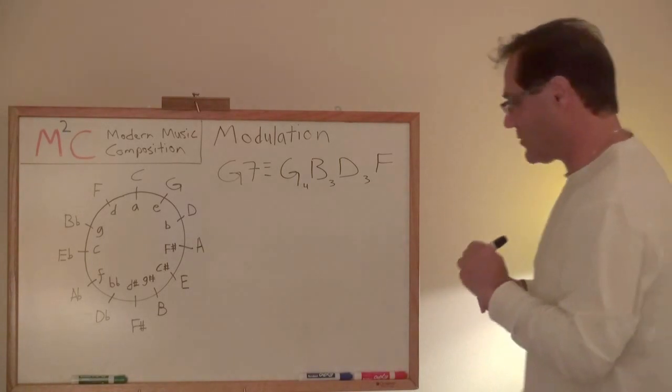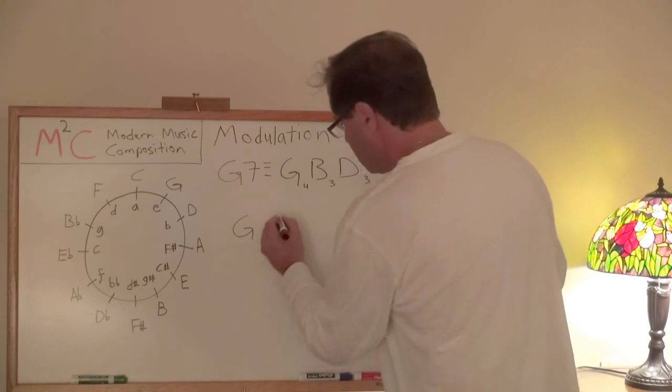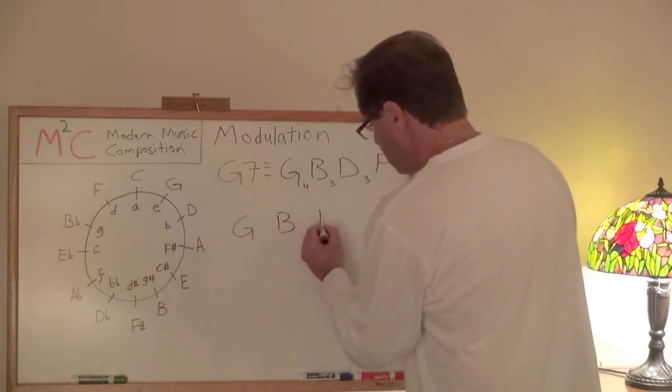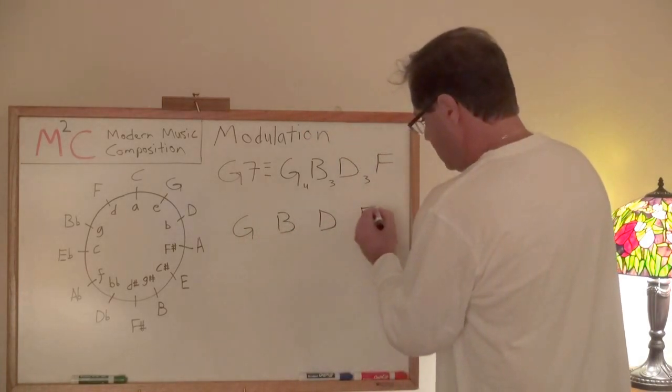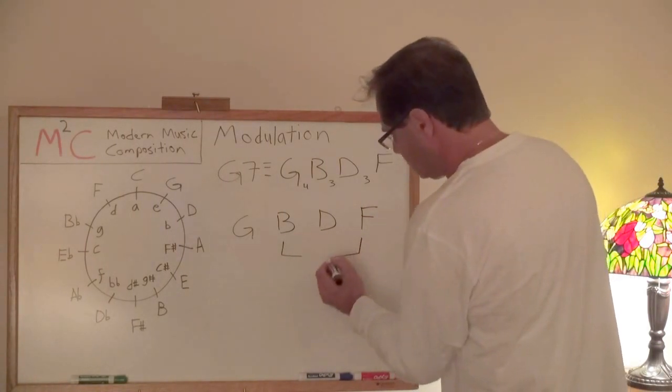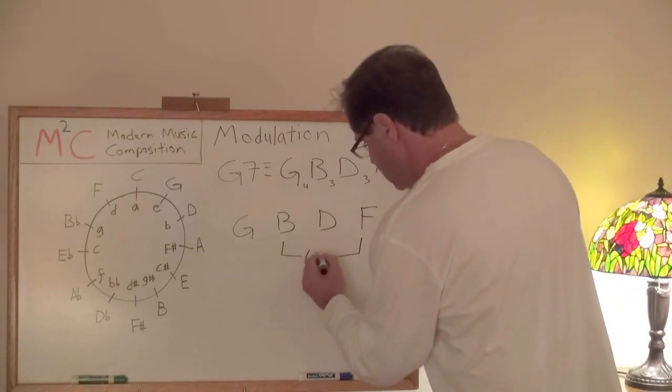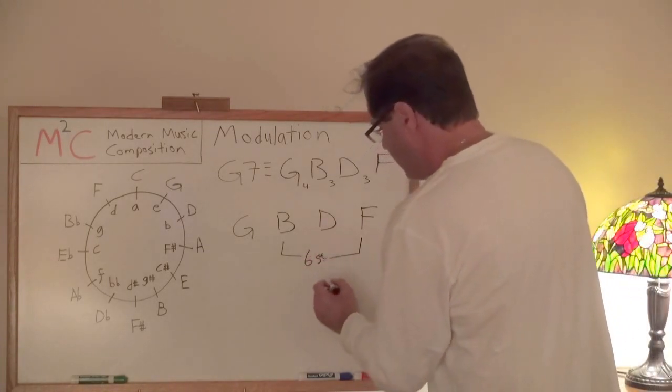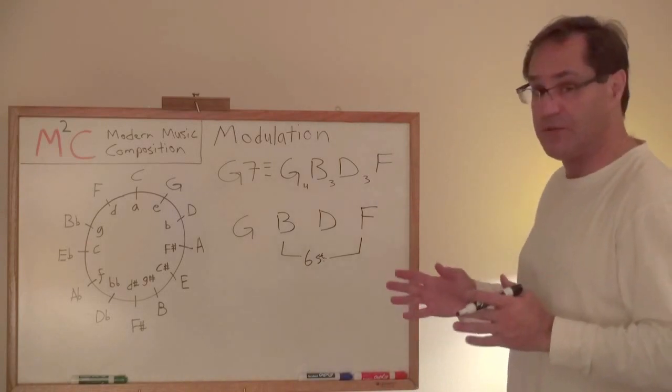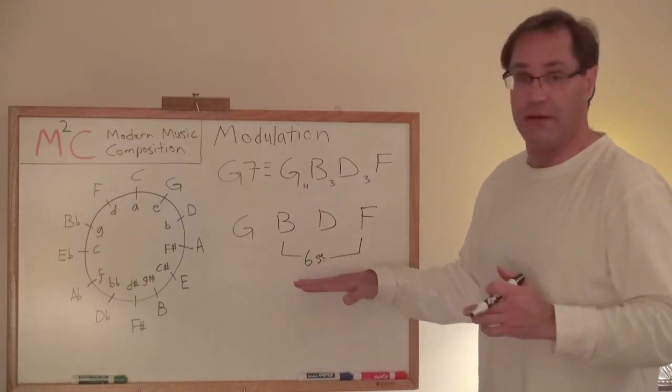But what does that create? Well, let's expand this. Between D and F, how many semitones do we have? Six. That's your tritone, your diminished fifth. That's the whole magic here.